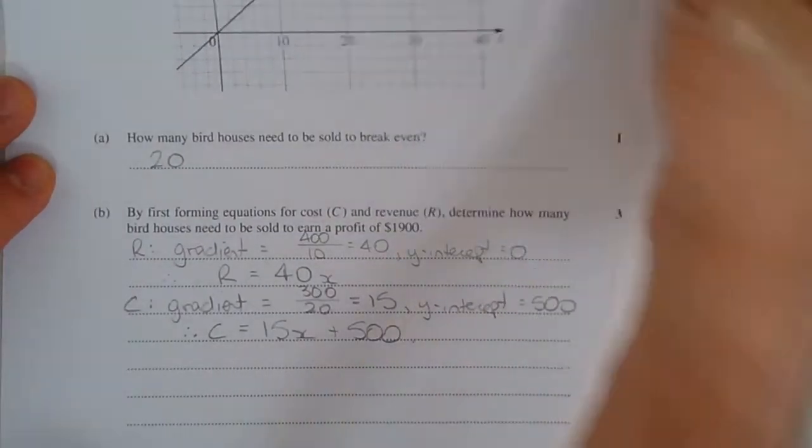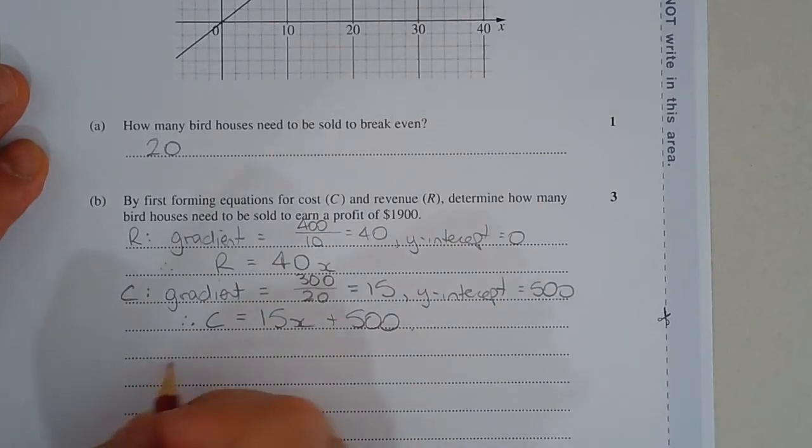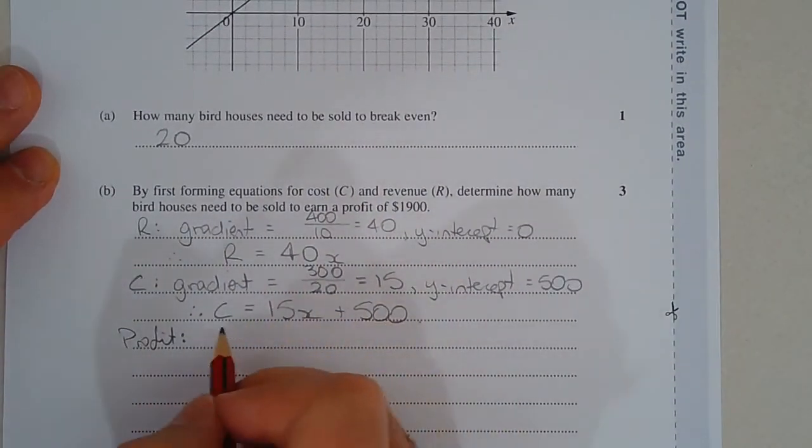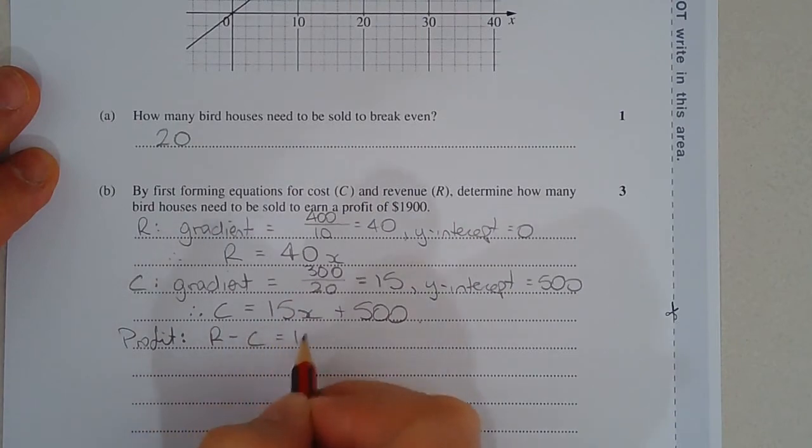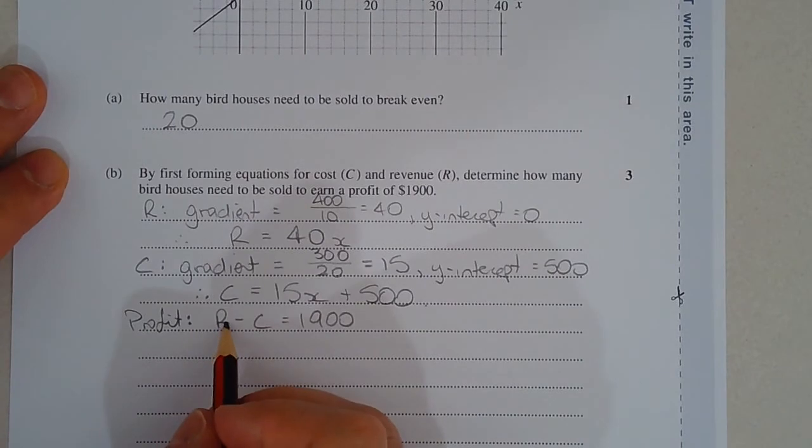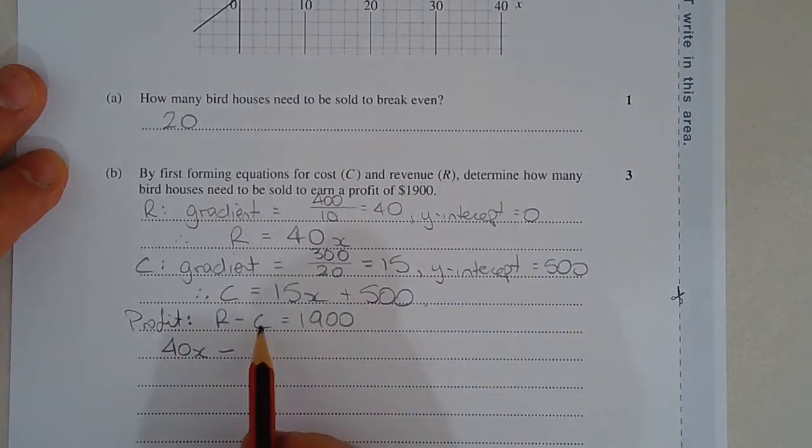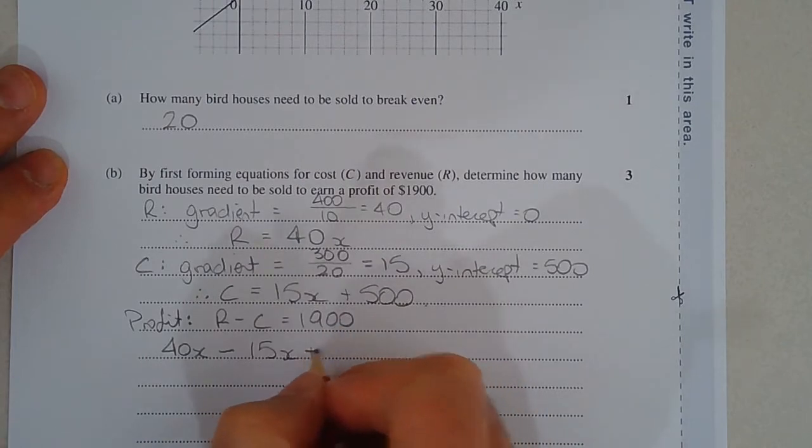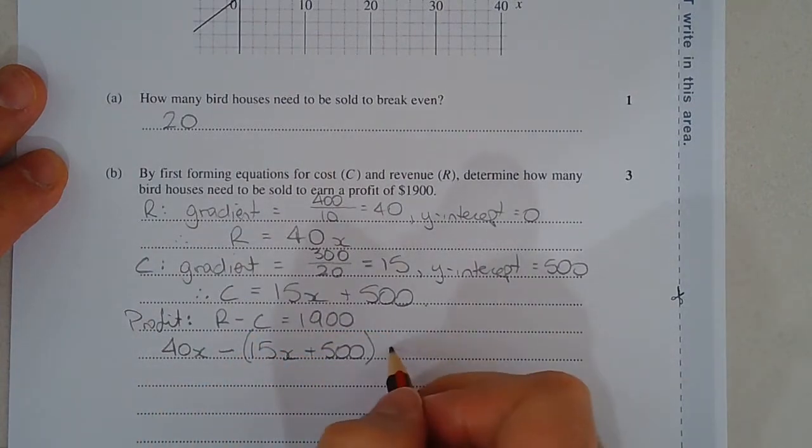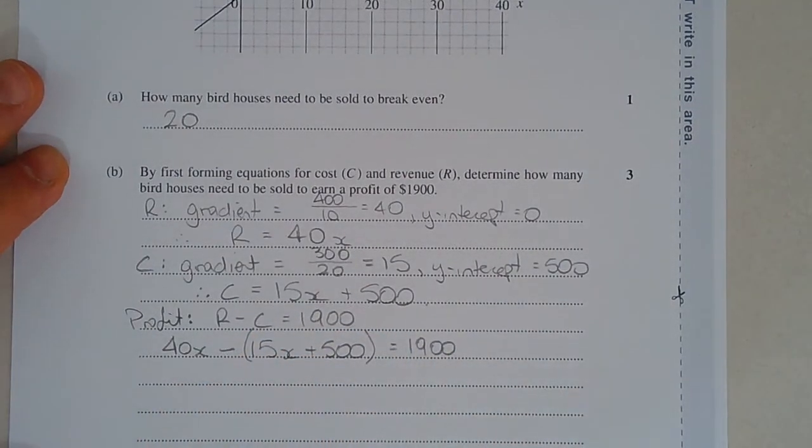Now what we're going to do is form another equation and solve for x for the profit. So profit. R minus C is equal to $1,900. So the revenue is 40x minus the cost, which is 15x plus 500, is equal to $1,900.